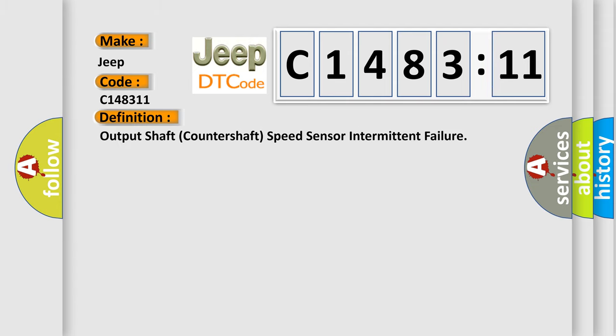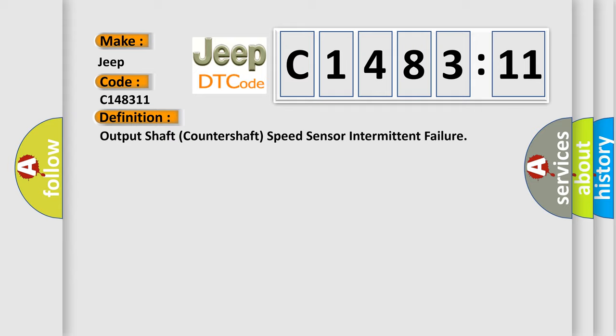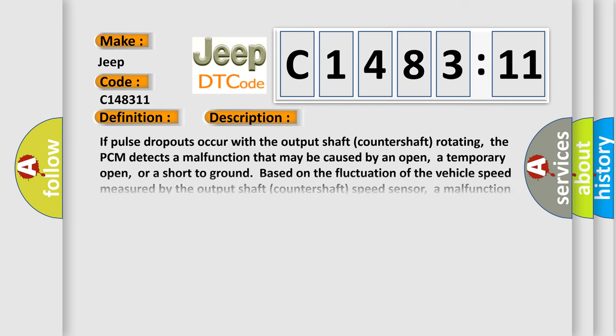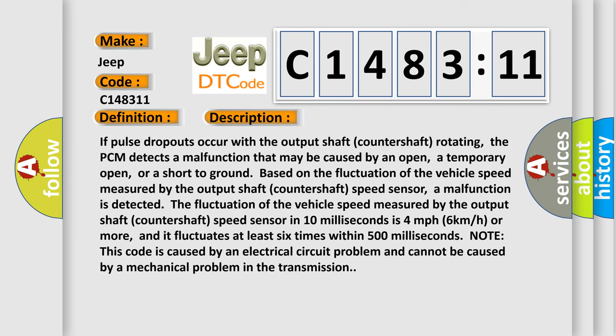The basic definition is: output shaft countershaft speed sensor intermittent failure. And now this is a short description of this DTC code. If pulse dropouts occur with the output shaft countershaft rotating,